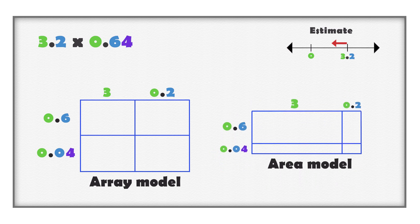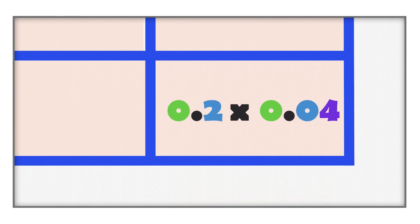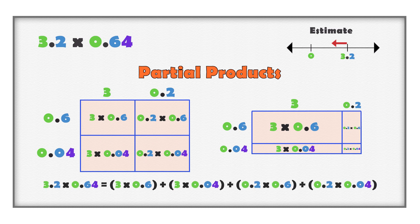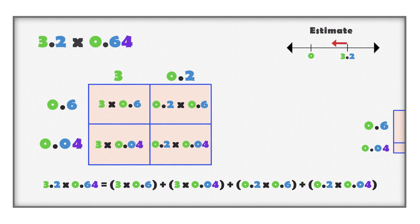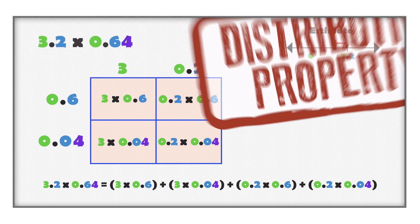Multiply the value of each digit in one number with each digit in the other number. Multiply three with six tenths and with four hundredths. Multiply two tenths with six tenths and with four hundredths. These values are called partial products. Add together the partial products to get the total product or, in this example, the cost of the grapes. Multiplying in parts and adding the parts together is called the distributive property.